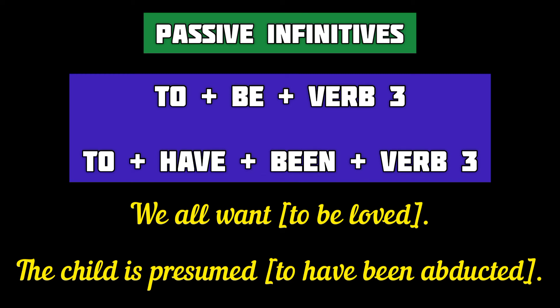In passive voice, infinitives have a different structure: 'to + be + V3 (past participle)' in present tense, and 'to have been + V3 (past participle)' in past tense. For example: 'We all want to be loved' — 'to be loved' is a passive infinitive in present tense. 'The child is presumed to have been abducted' — 'to have been abducted' is a passive infinitive in the past tense.